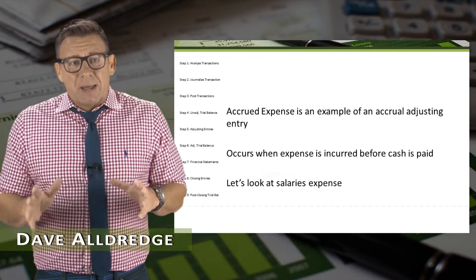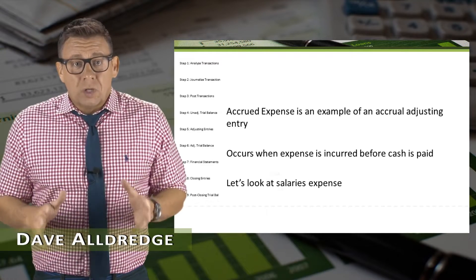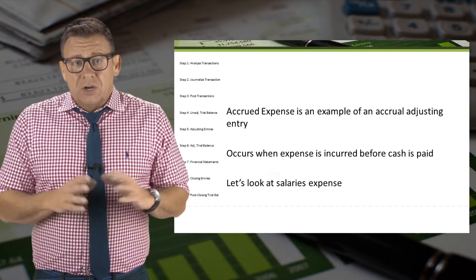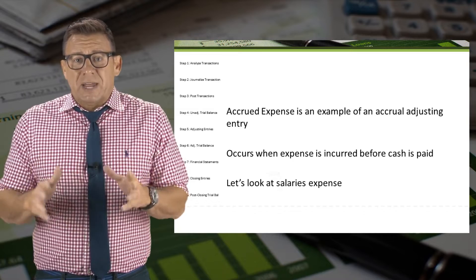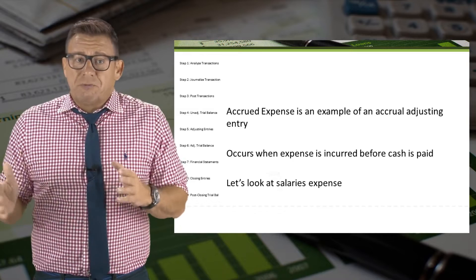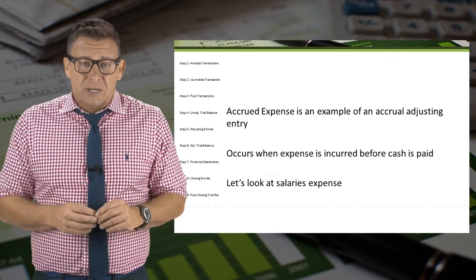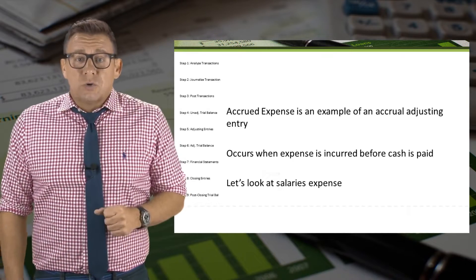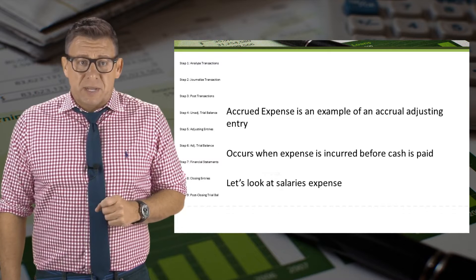Accrued expense is an example of an accrual adjusting entry. It occurs when expense is incurred before cash is paid. Let's learn how to accrue salary expense.